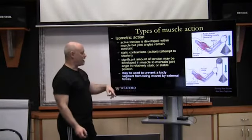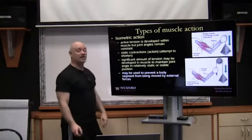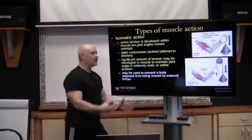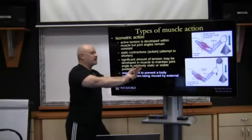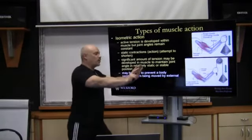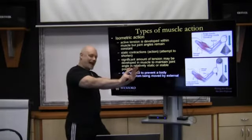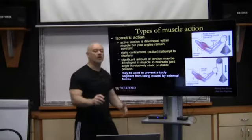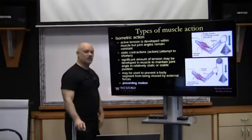Isometric action may be used to prevent a body segment from being moved by external forces. Think about it if somebody's coming at you — we put our arms out and they're trying to push, but we push back and hold them there. That's a static action, just a holding action. Think about it as a holding action. It prevents motion.